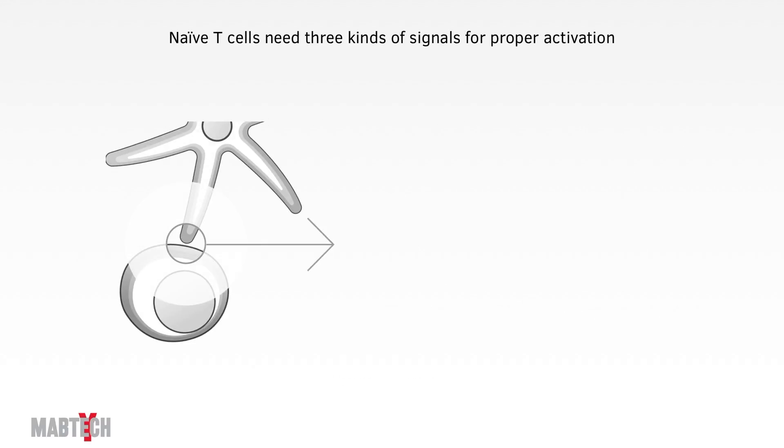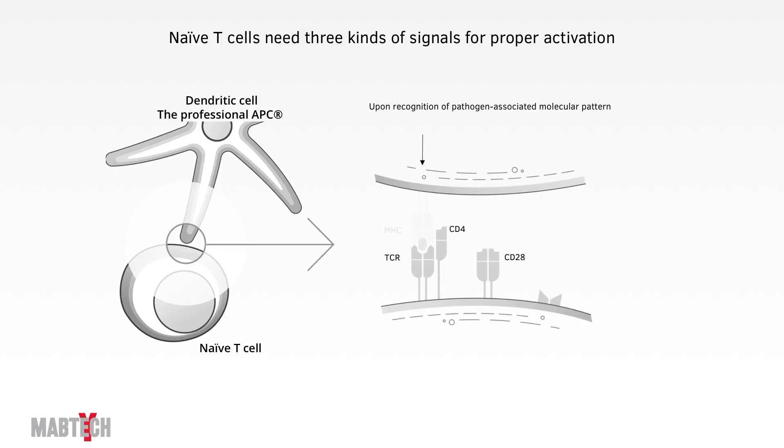For that first step of antigen recognition to lead to trigger happy effector cells, the antigen-presenting cell needs to provide three kinds of signals. Signal 1 is the binding of MHC molecule plus peptide to the T-cell receptor. But in addition, for the T-cell to survive, the antigen-presenting cell needs to provide signal 2 in the form of a co-stimulating CD80/86 binding to CD28 on the T-cell. Finally, signal 3 is different combinations of cytokines that dictates what kind of effector cell the T-cell should become.